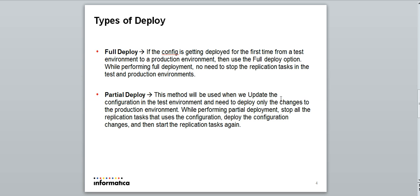IDR has two types of deployment: full deploy and partial deploy. Full deploy is used when the configuration is getting deployed for the first time from a test environment to a production environment. While performing full deployment, there is no need to stop the replication tasks in the test and production environments. Partial deploy is used when we update the configuration in the test environment and need to deploy only the changes to the production environment. While performing partial deployment, stop all the replication tasks that use the configuration, deploy the configuration changes, and then start the replication tasks again.